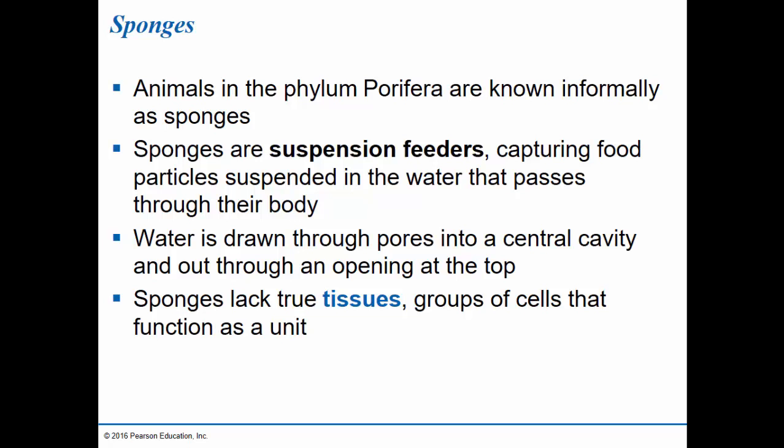We say that sponges lack true tissues. Tissues are groups of cells that function together as a unit to carry out a particular function. The definition of tissue is the same in plants and animals. We say that sponges lack true tissues because essentially all of the cells in the sponge work together for the same function — we don't have separate groups of tissues with different functions.